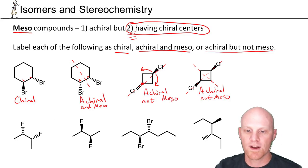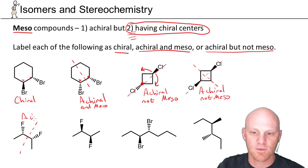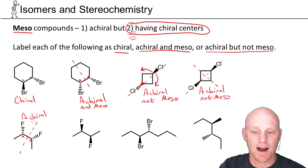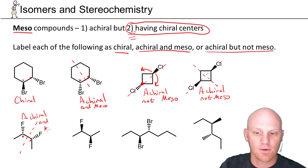The next example: I can see the internal mirror plane, making this achiral. This carbon right here has four different groups, and this one right here has four different groups — those are chiral centers. If you're achiral but have chiral centers, that makes you achiral and meso.